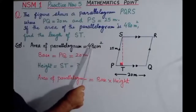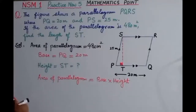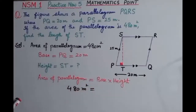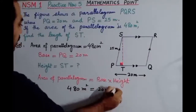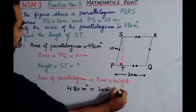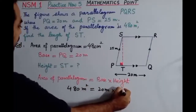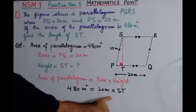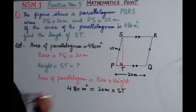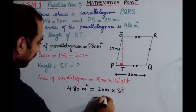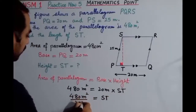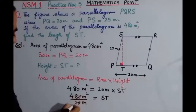Area of parallelogram is given as 480 meter square. Base is 20 meters. Height is what we have to find — we write ST. Now dividing both sides by 20: 20 is cancelled, and ST remains on one side. On the other side we have 480 meter square over 20 meters.